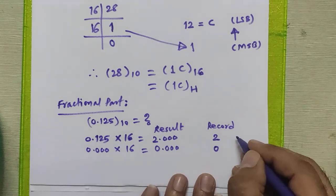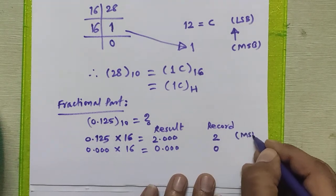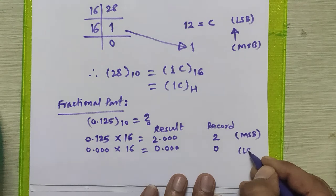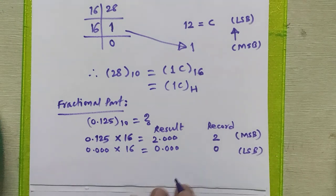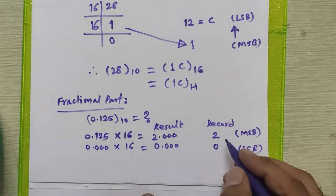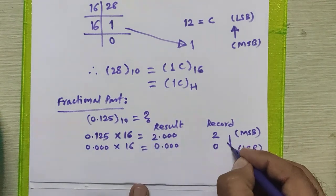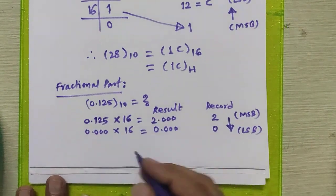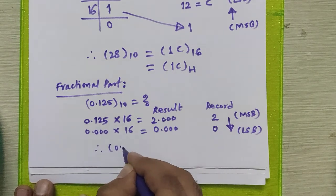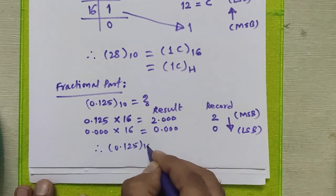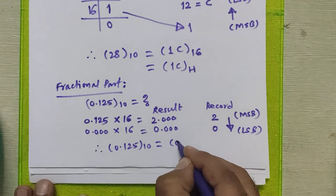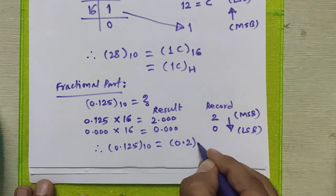In this case, this is our MSB bit, whereas this is LSB bit. To get the hexadecimal equivalent, we arrange this data from top to bottom. Therefore, 0.125 decimal is equivalent to 0.2 in hexadecimal.